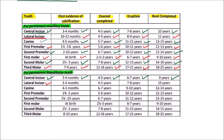For the mandibular lateral incisor, the first evidence of calcification is at 3 to 4 months, enamel is completed by 4 to 5 years, eruption occurs by 7 to 8 years, and the root is completed by 10 years.